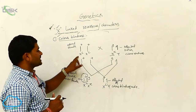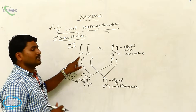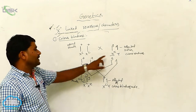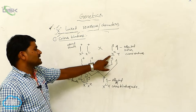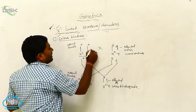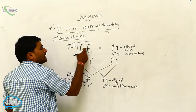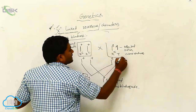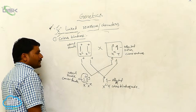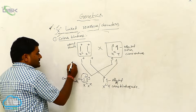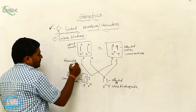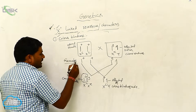Generally, for understanding, I took capital C to mean dominant allele. Capital C means dominant allele, small c means recessive allele. So, mother is normal — normal female — and here affected father. These are gametes.